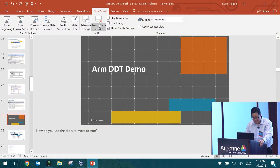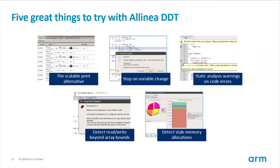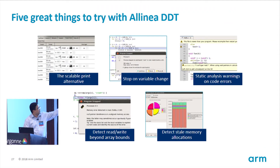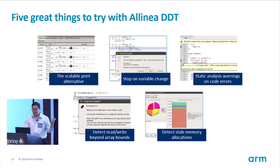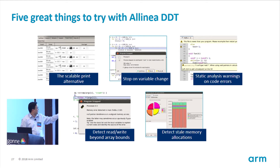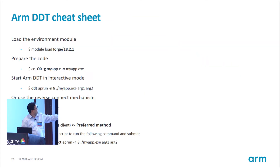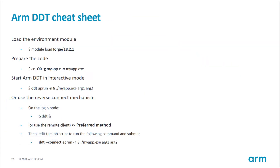Back to the presentation — that's DDT. Other things you can do: stop on variable change, use static analysis warnings — for instance if you declared a variable but forgot to initialize it or never use it, DDT will warn you. There are also additional memory debugging features. This serves as a cheat sheet for using DDT, and it's all available on the web.